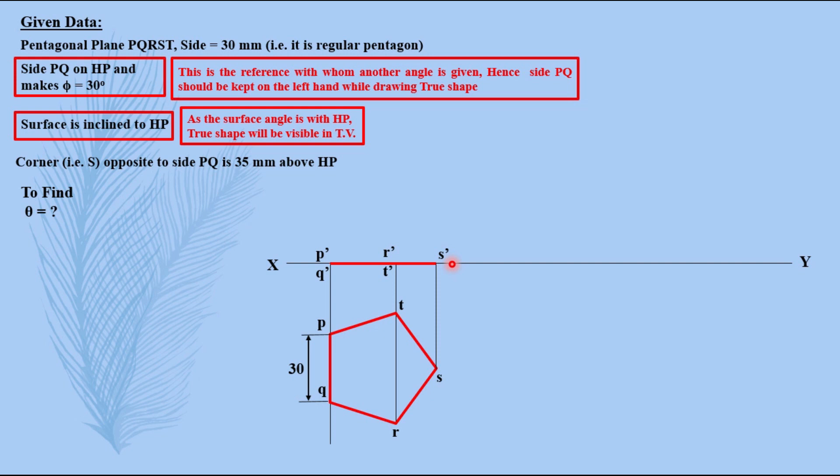Now, as seen in previous videos our step is to take theta angle and put this front view on that angle theta, but here theta has to be found out. In place of theta what is mentioned? It is mentioned that corner S opposite to side PQ is 35mm above HP. You have to keep P dash Q dash on the XY line and tilt this line such that S dash should be 35mm above XY. So you will take a point P dash Q dash, take distance 35, draw a locus, take compass at P dash with radius equals to P dash S dash, keep it on P dash S dash here and cut it.